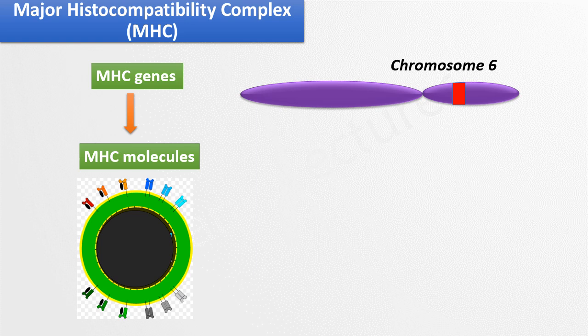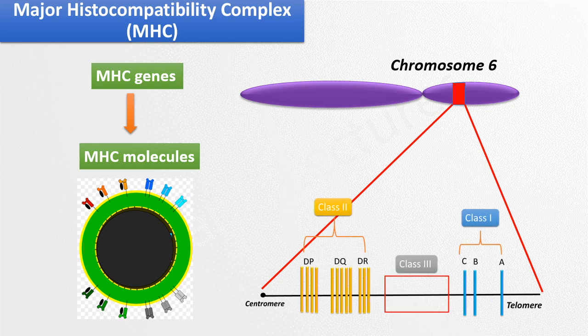These protein molecules are known as major histocompatibility antigens or major histocompatibility molecules. We also studied that in humans there are three classes of these major histocompatibility molecules namely class 1, class 2 and class 3.